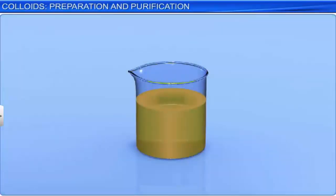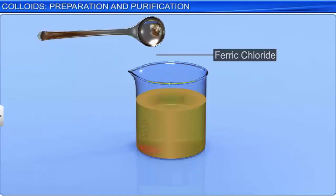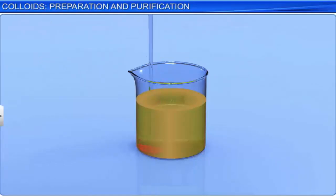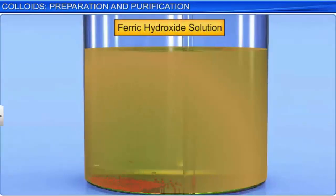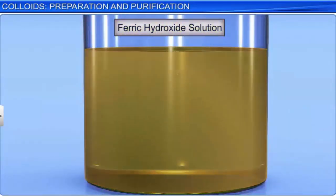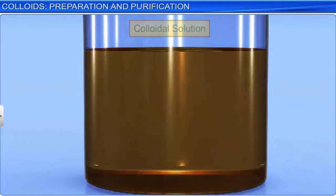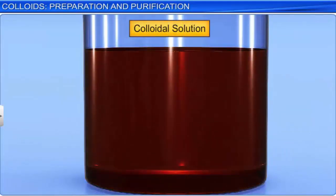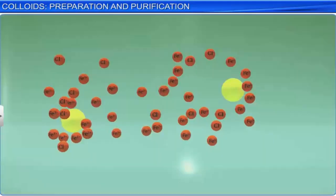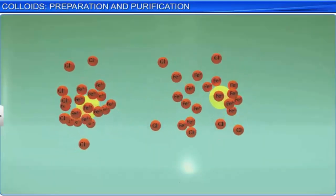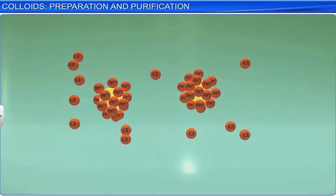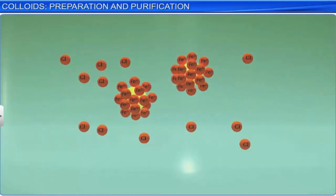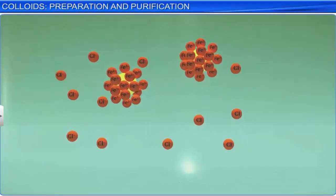These charged species repel one another and as a result the precipitate disintegrates into colloidal sized particles. It is important to note that freshly prepared precipitates are preferred because the particles are not firmly attached to each other and therefore undergo disintegration easily. For example, the addition of ferric chloride to a freshly prepared precipitate of ferric hydroxide converts it into a colloidal solution reddish brown in color. The ferric ions from ferric chloride get preferentially absorbed by the ferric hydroxide precipitate.